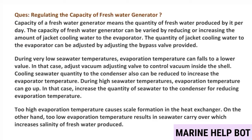Regulating the capacity of a fresh water generator means controlling the quantity of fresh water produced per day. The capacity can be varied by reducing or increasing the amount of jacket cooling water to the evaporator, adjusted by the bypass valve provided. When asked how to regulate capacity in MMD exams, the answer is to adjust the bypass valve. Additional questions may ask what to do when sea water temperature is high or low.